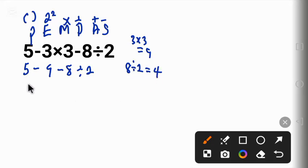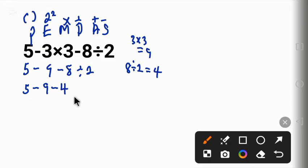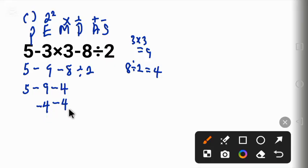We write everything again: 5 minus 9 minus 4. Now go left to right. 5 minus 9 gives us minus 4. Minus 4 minus 4 is equal to minus 8.